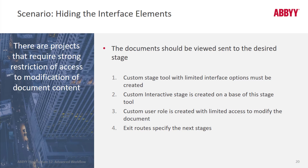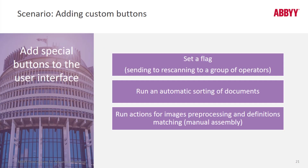Another thing you can do is select Exit Routes to specify the next stage. Also, and this is certainly a powerful feature, you can add custom buttons. We talked about automatic sorting — you could actually add a custom button linked to some script to do manual sorting, so now you've made some changes and want to manually sort the documents in your batch.